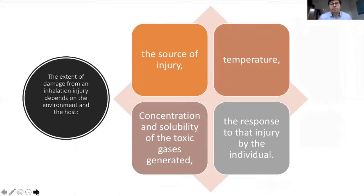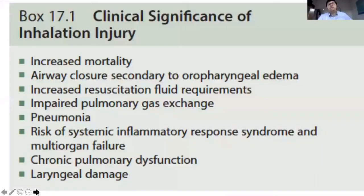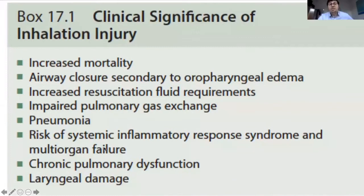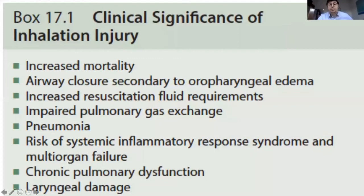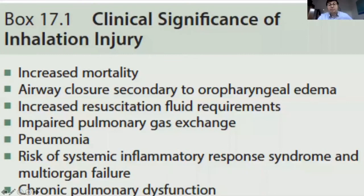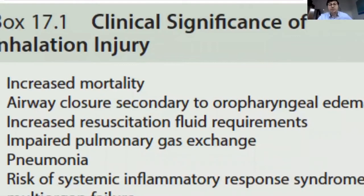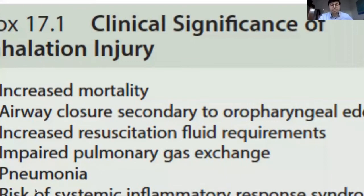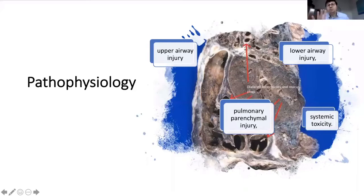The extent of damage from an inhalation injury depends on the environment and the host. It depends mainly on the source of injury — whether it may be in a factory containing toxic gases — temperature, concentration and severity of toxic gases generated, and the response to that injury by the individual. Clinical significance of inhalation injury includes increased mortality, airway closure secondary to oropharyngeal edema, increased resuscitation fluid requirements, impaired pulmonary gas exchange, association with pneumonia, risk of systemic inflammatory response syndrome, and multi-organ failure.